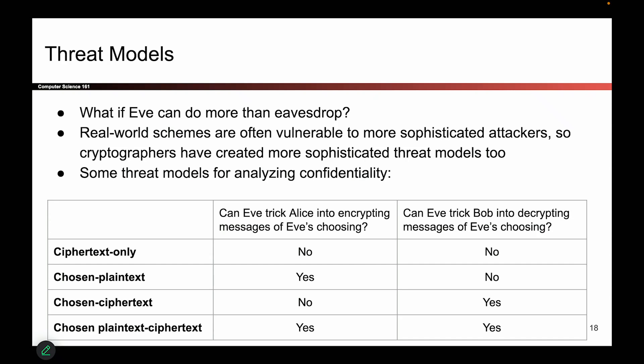For this class, we're going to look at four different models that give Eve and Mallory different abilities. Depending on what you think is happening in real life, you can choose the model most appropriate for your system. Here we'll look at threat models for confidentiality in particular — encrypting and decrypting — and we'll come back to integrity later.